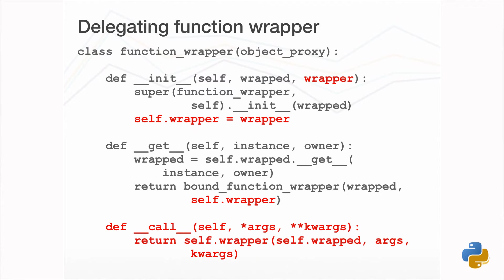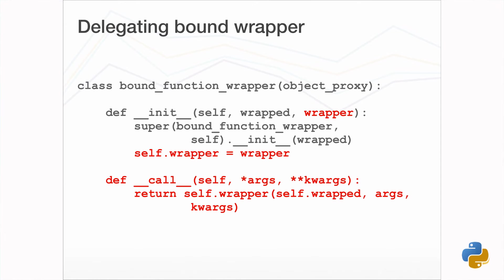The __call__ method of our function wrapper, for when the wrapper is used around a normal function, calls the decorator wrapper function with the wrapped function and arguments, leaving the calling of the wrapped function up to the decorator wrapper function. In the case where binding a function, the wrapper is also passed to the bound wrapper. The bound wrapper similarly delegates to the decorator wrapper function via its __call__ method. So we can make creating decorators easier using a factory.